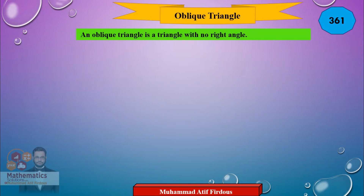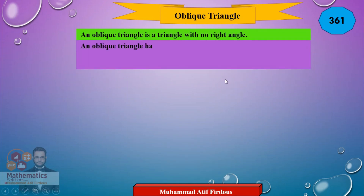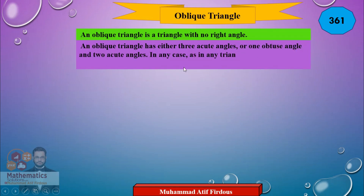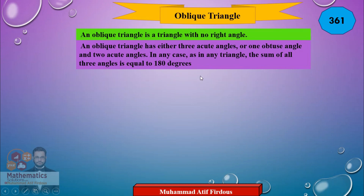A triangle which is not a right triangle is called an oblique triangle. This is the definition of an oblique triangle, which has either three acute angles, or one obtuse angle and two acute angles. In any triangle, the sum of all three angles is equal to 180 degrees.